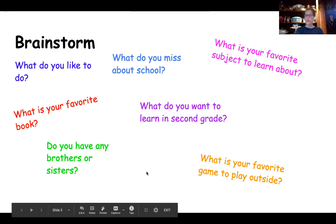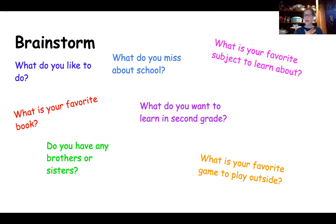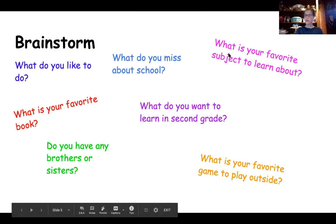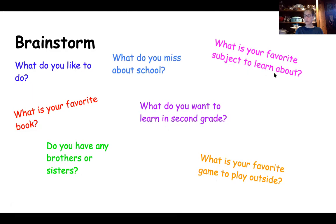Here's the brainstorm slide. Talking about yourself can be difficult at times, but you only have to come up with three details about yourself. You could pick three of these questions and those could be your details: What do you like to do? What is your favorite book? Do you have any brothers or sisters? What do you miss about school? What do you want to learn in second grade? What is your favorite game to play outside? What is your favorite subject to learn about? You can use these questions, or if you have other details about yourself, you can certainly use those.